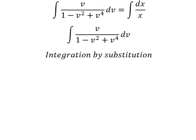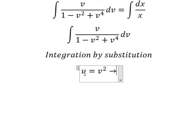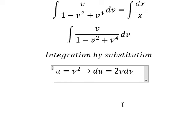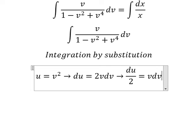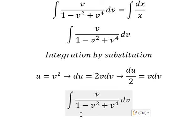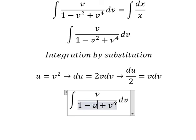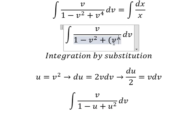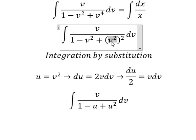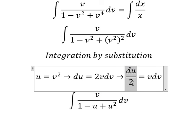So I will put u equals to v squared, and then we differentiate both sides. We have 2v dv. Because we don't have the number 2, we need to divide both sides by 2. So this term we change to u, this term we change to u squared, because v to the power of 4 is v squared to the power of 2. That's why we change it to u squared, and v dv we change by this expression.